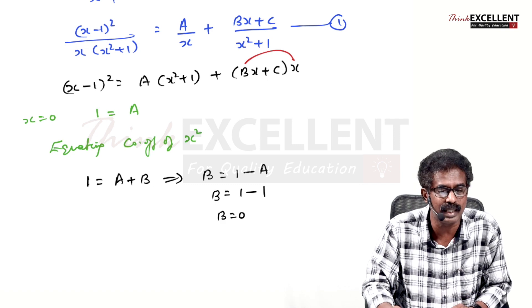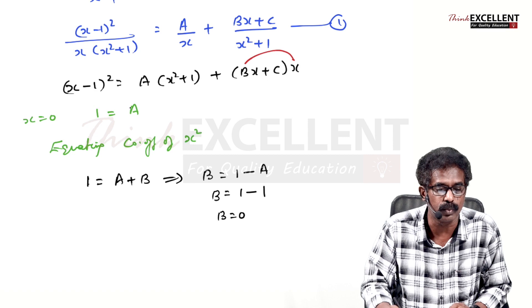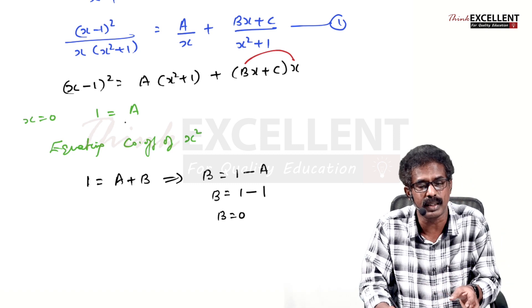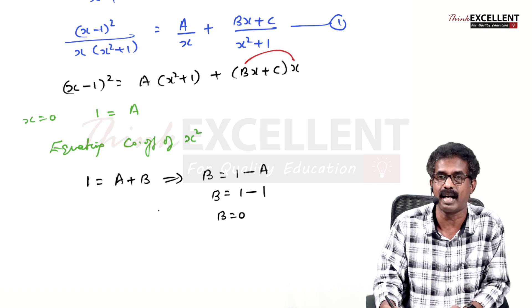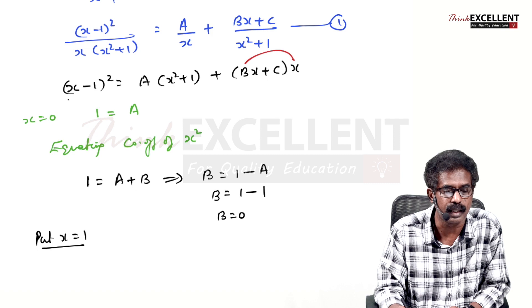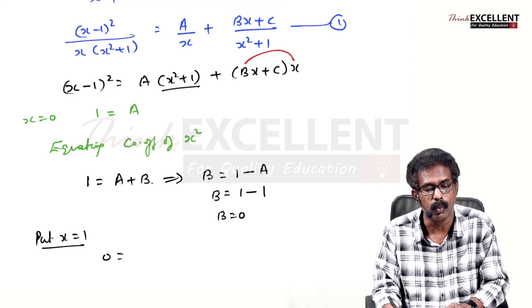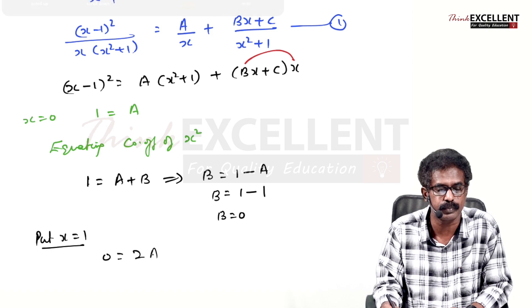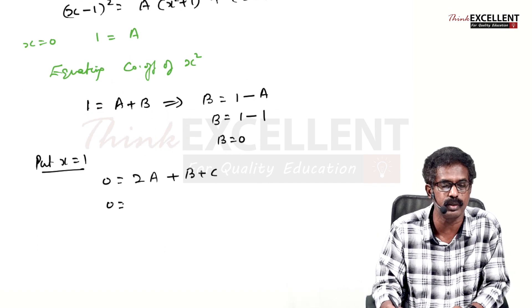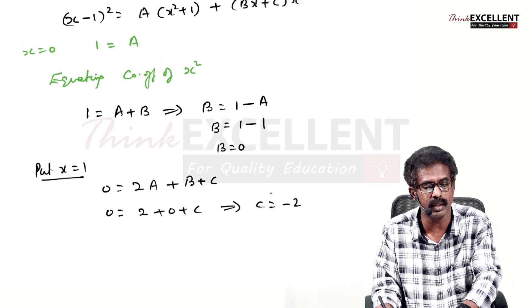Equating constants gives A = 1, which we already know. So to find C, substitute x = 1. Left side: (1-1)² = 0. Right side: A(1+1) + (B+C)(1) = 2A + B + C. Substituting A=1 and B=0: 0 = 2(1) + 0 + C, so C = -2.